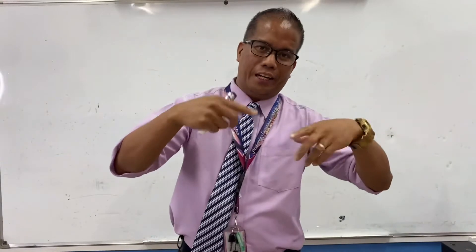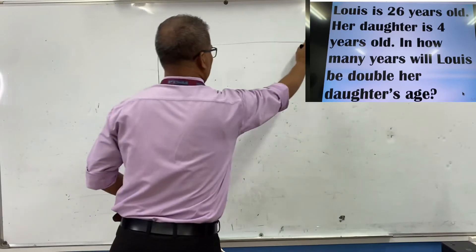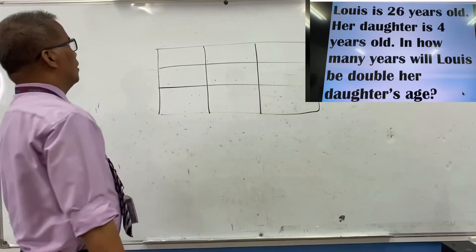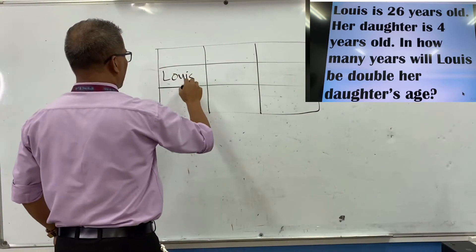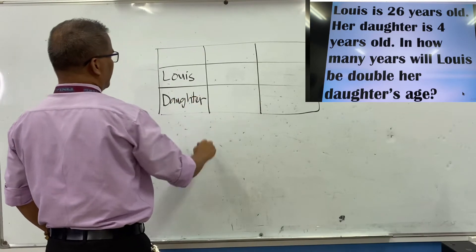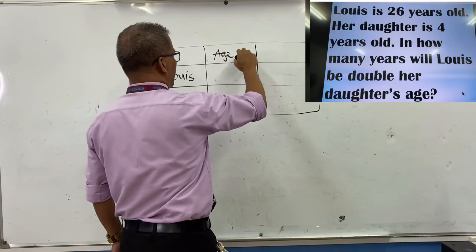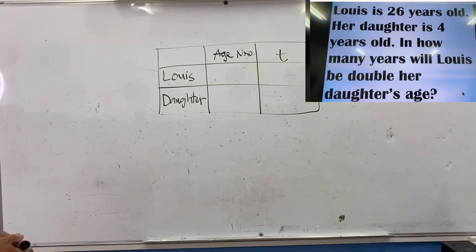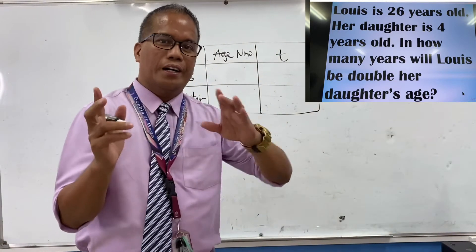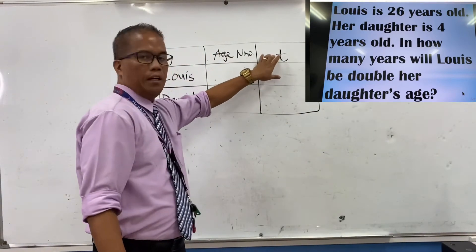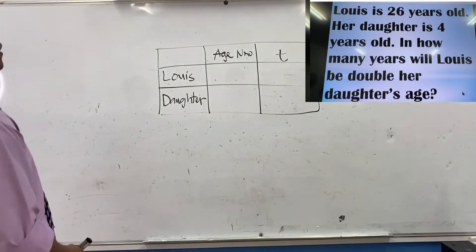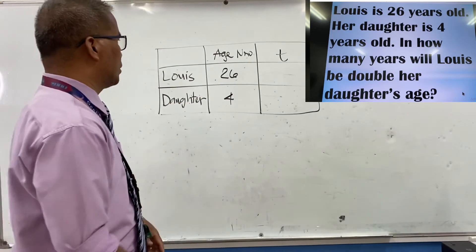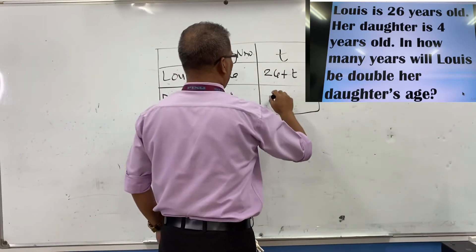We start by making a table with Louise and daughter, and their ages now. We don't know the number of years, so we represent it as t. Louise is 26 years old and daughter is 4 years old. In how many years, we write 26 plus t for Louise and 4 plus t for daughter.